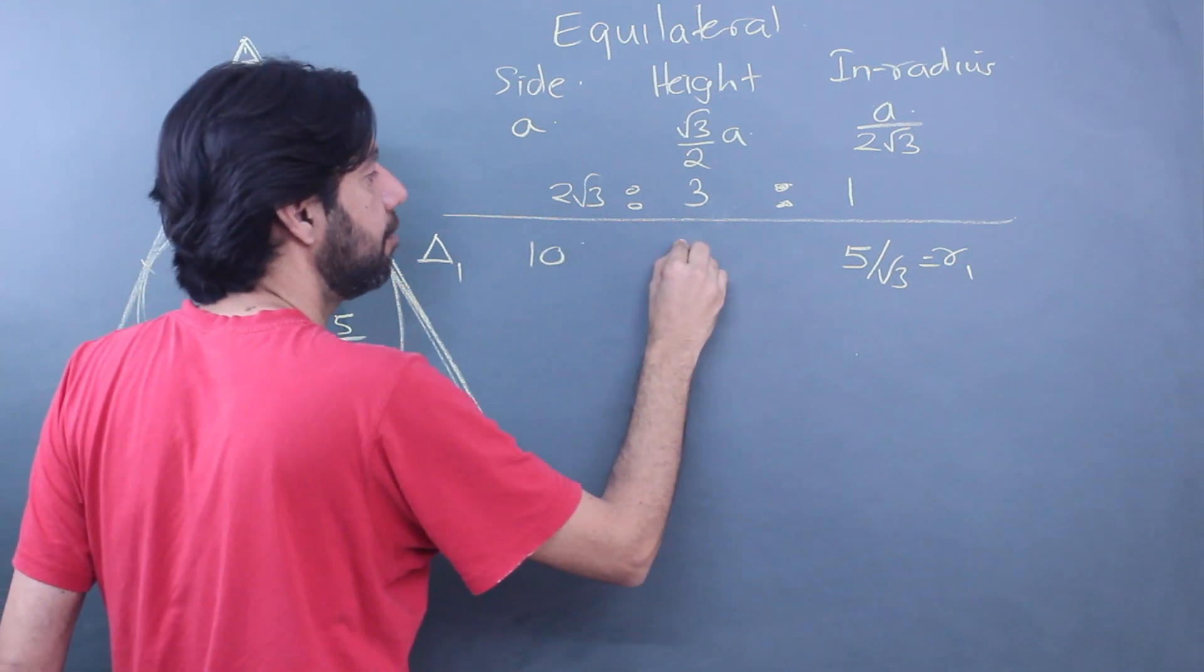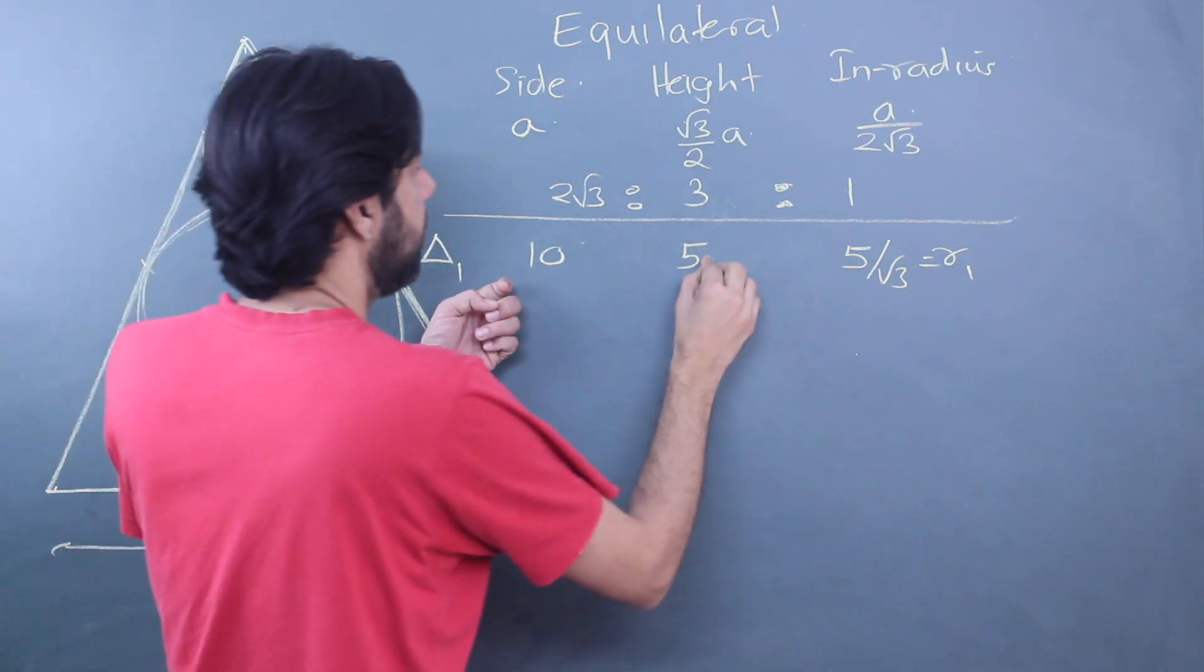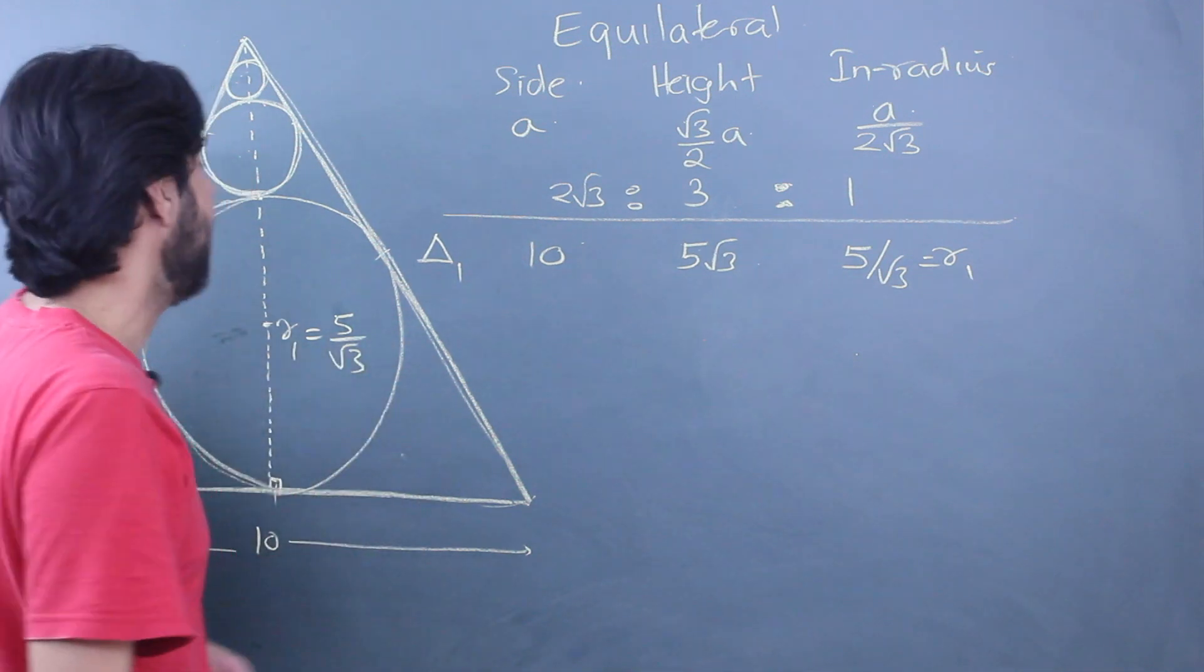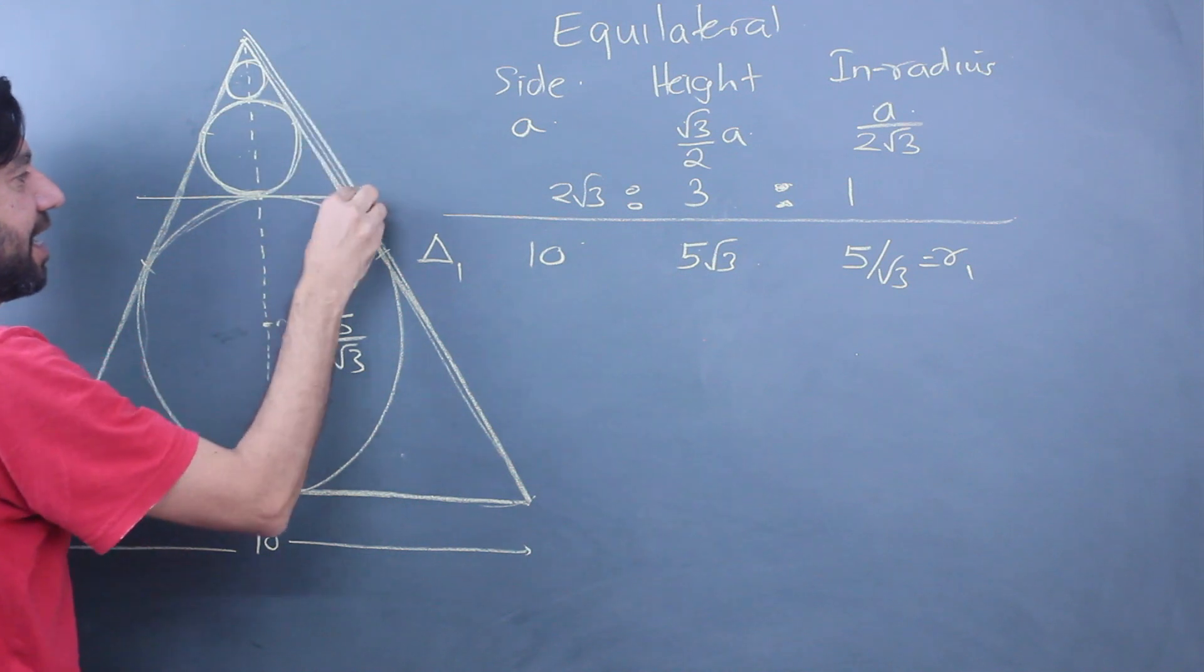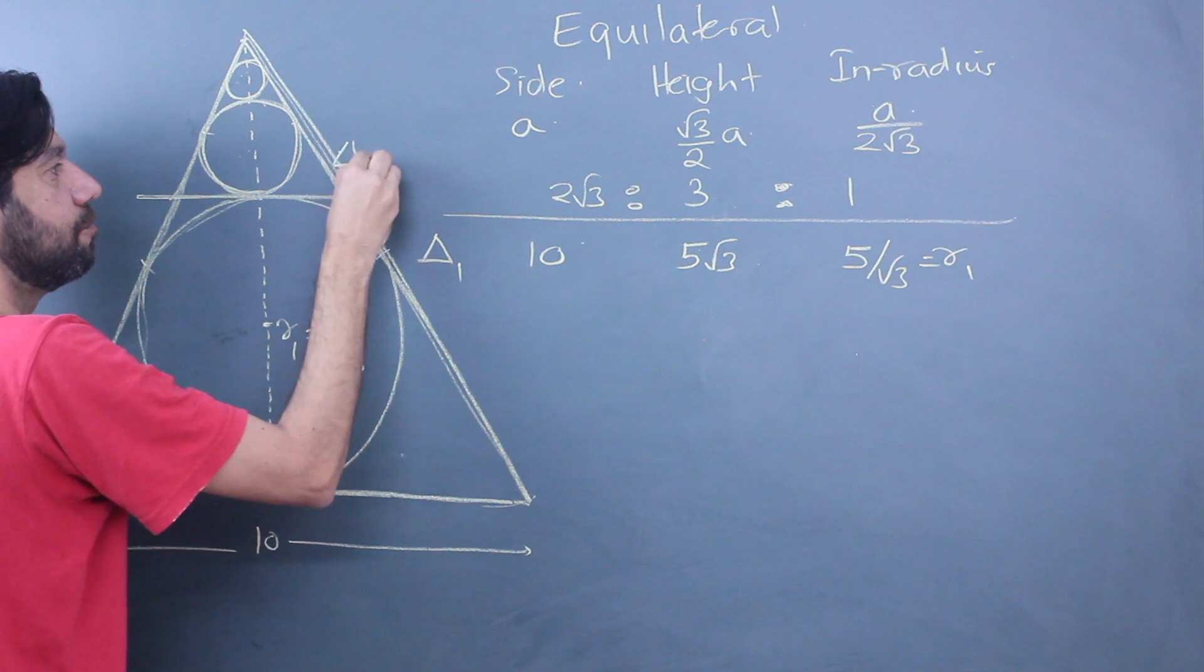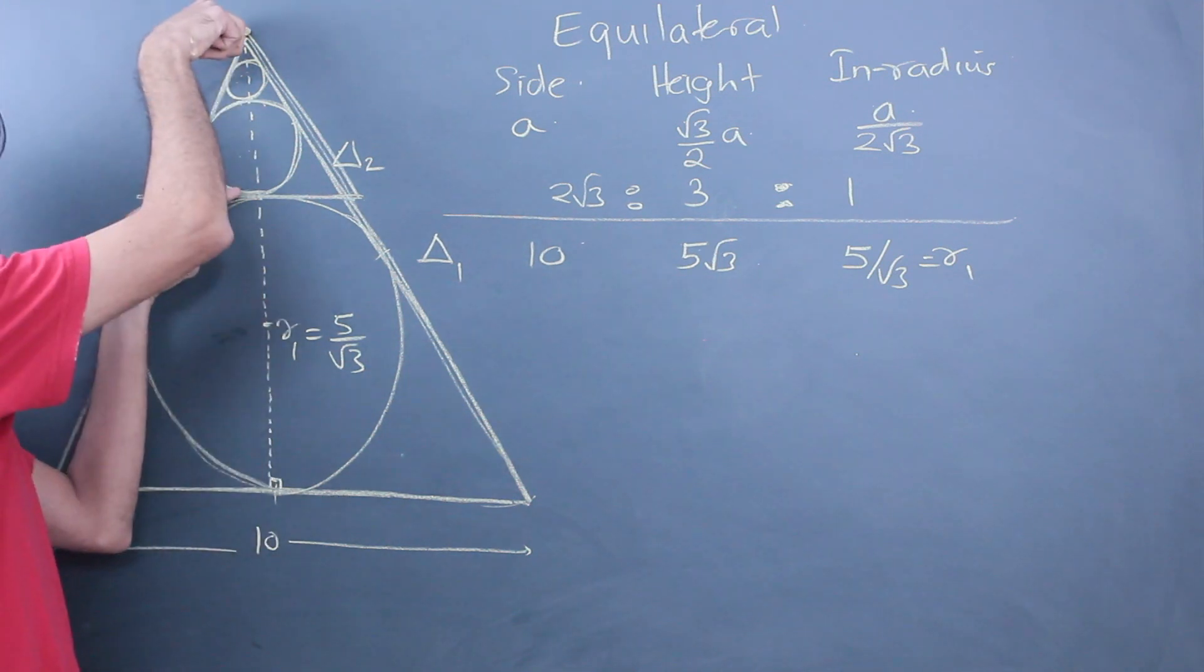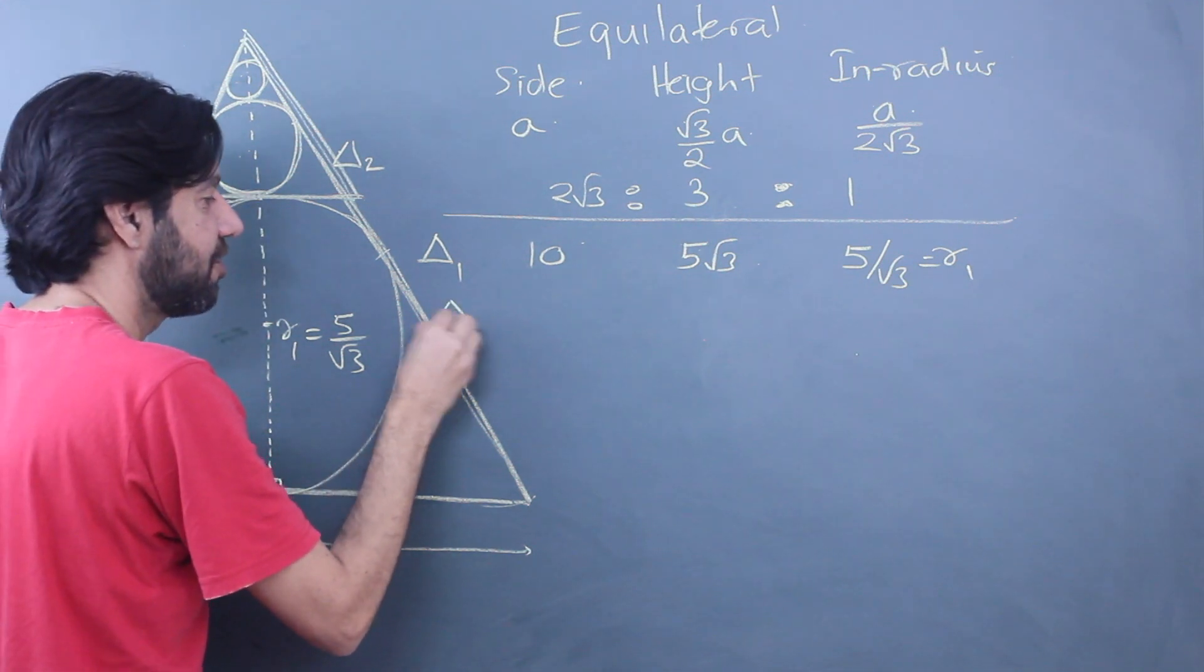Now for the second circle, the thing I would advise is you could have just thought of it also being an equilateral triangle by drawing this parallel line. So let me call this triangle 2. If I know height, side, anything of triangle 2, I know the inradius also. Can I get the height as the complete height minus the diameter?